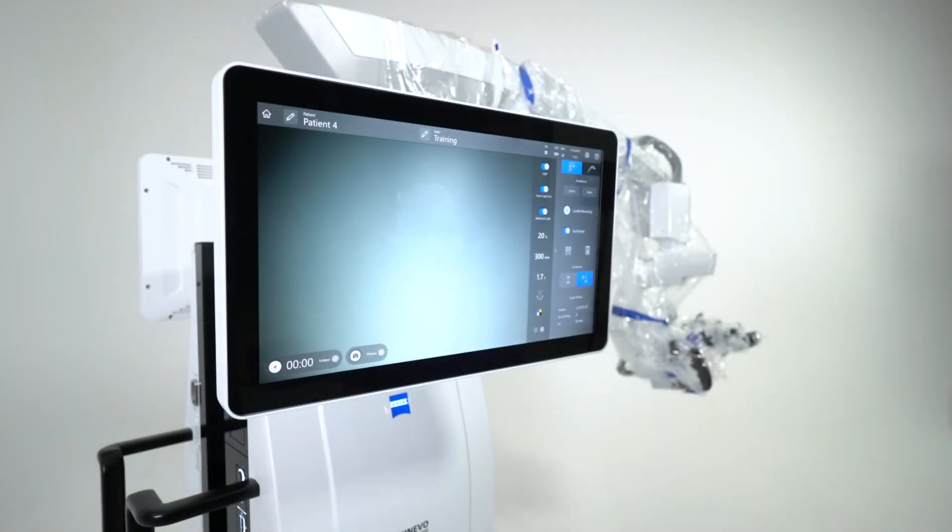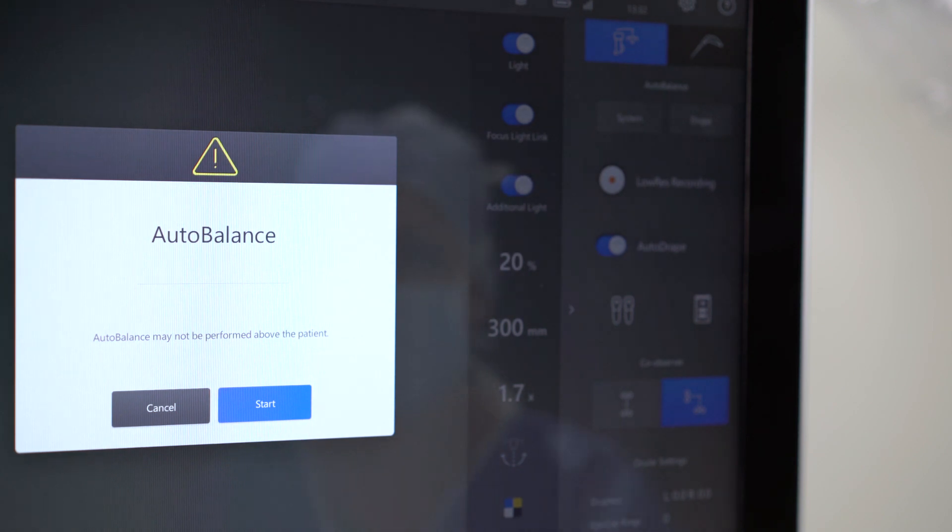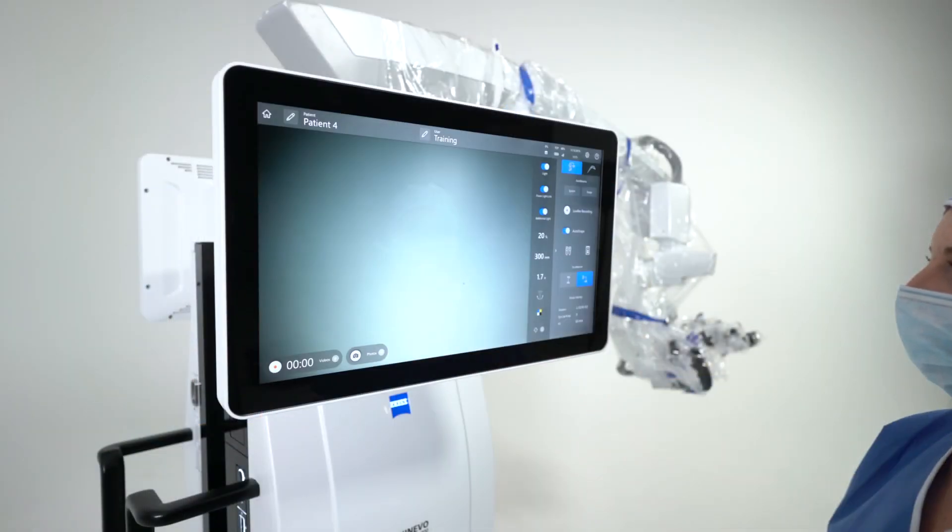After you completed draping the Zeiss Kenevo 900, make sure to start Auto Balance Drape. The balancing process will be done immediately. Afterwards, press Done to finalize draping Zeiss Kenevo 900 with Zeiss Smart Drape.